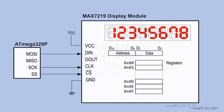The MAX7219 Display Module. This is a block diagram showing the connection between the ATmega328 and the MAX7219 Display Module.